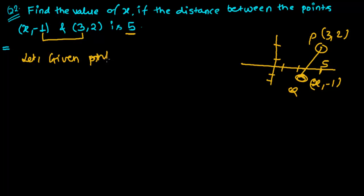Let given points are P(3, 2) and Q(x, -1). Therefore given that is PQ distance is given that is 5 unit. And we know from the distance formula, PQ distance is that is (x₂ - x₁)² + (y₂ - y₁)² under root equals 5.